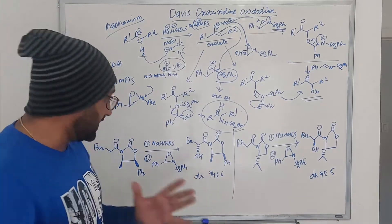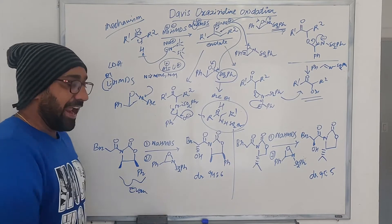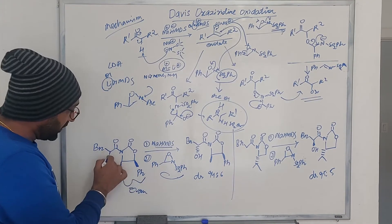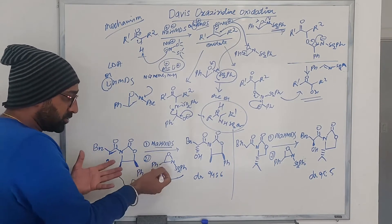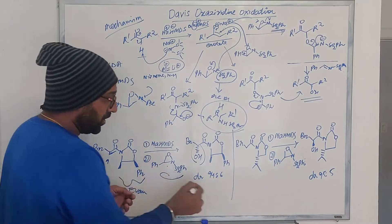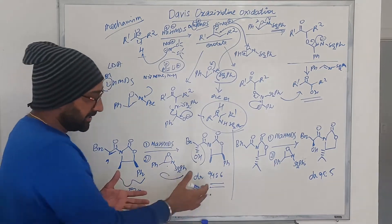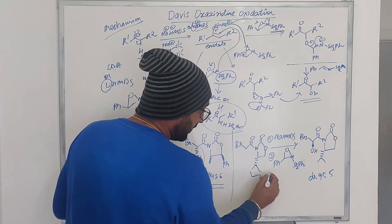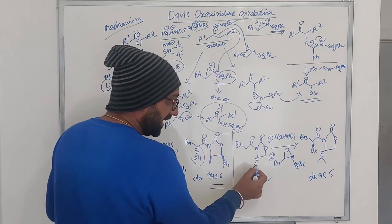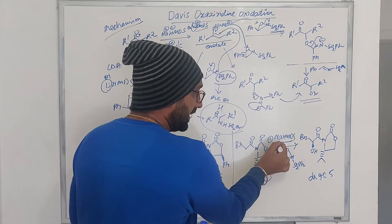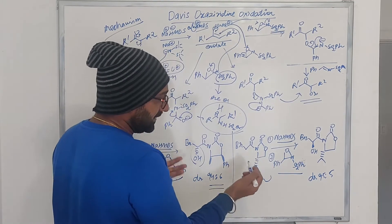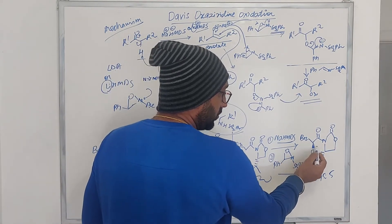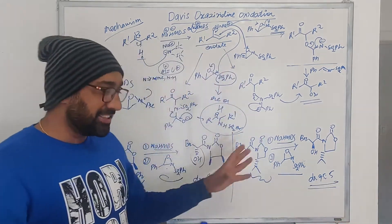Now let us look at examples. Here we have an Evans auxiliary, and we are using NHMDS and the Davis-Oxaziridine reagent. These groups are coming out of the plane, so we are generating the enolate from behind the plane, and hydroxylation occurs from behind the plane as well. This gives a diastereomeric ratio of 94 to 6 — meaning 94% of the desired product. In the second example, instead of the ethyl and phenyl auxiliary, we have an isopropyl group going behind the plane. Using NHMDS and Davis-Oxaziridine again, the hydroxylation comes out of the plane, giving a DR of 95 to 5.